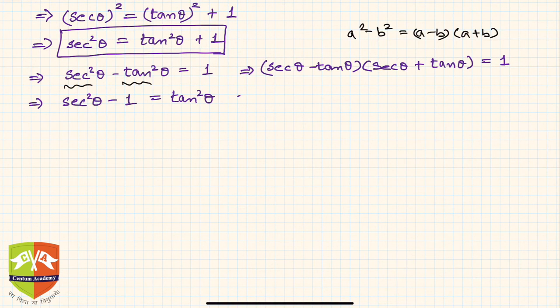if you use the same concept here, you will get secant theta minus one times secant theta plus one equals tan squared theta.